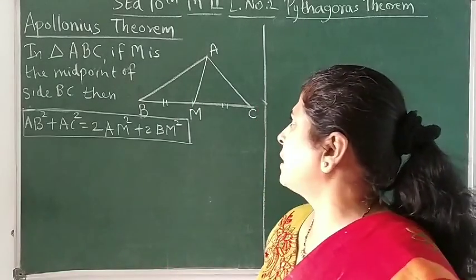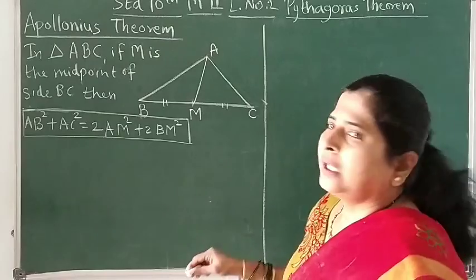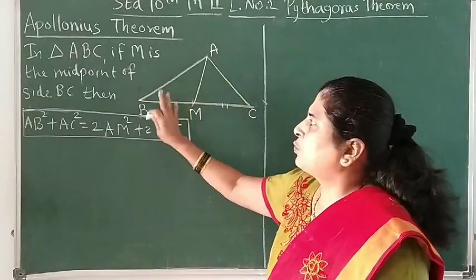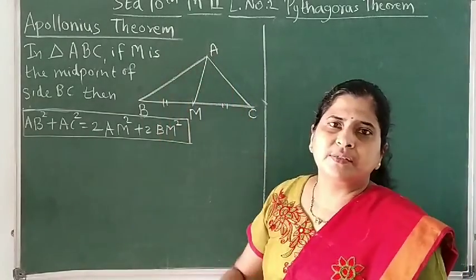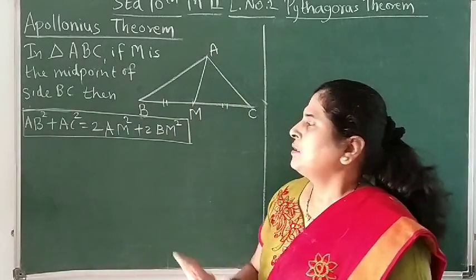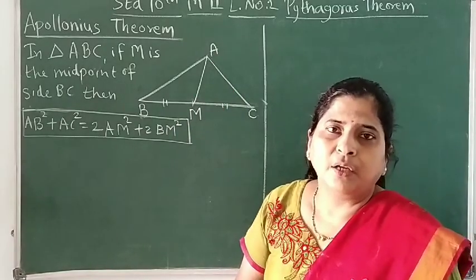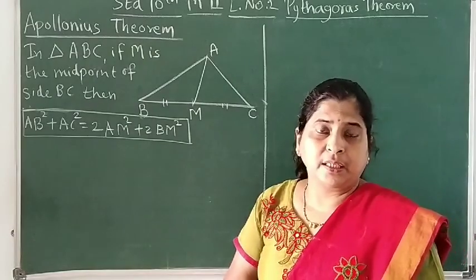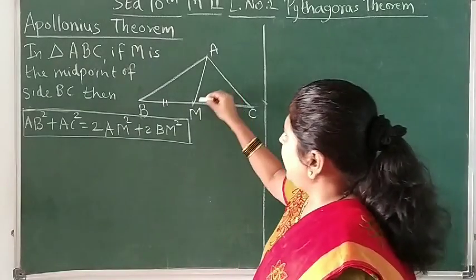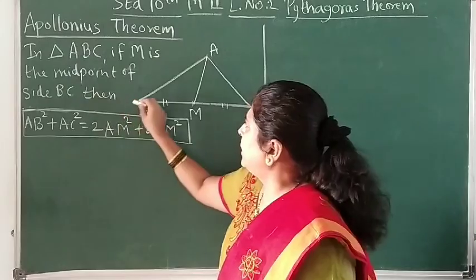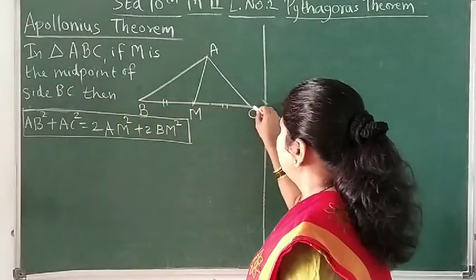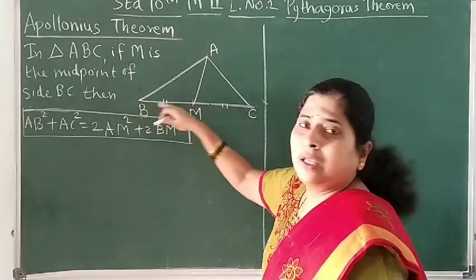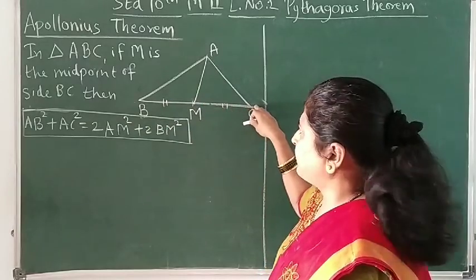So, what is the Apollonius theorem? For any triangle ABC, in the textbook it is given with the help of a figure. We have to understand what the theorem states: in any triangle, suppose M is the midpoint of side BC.